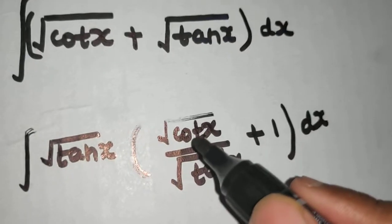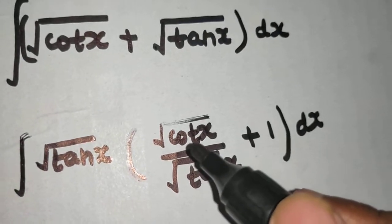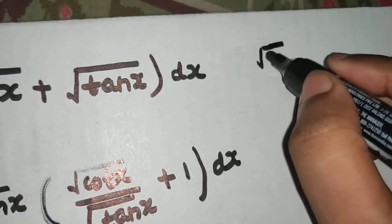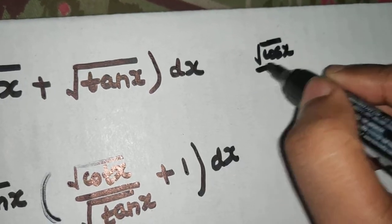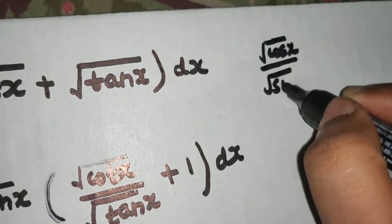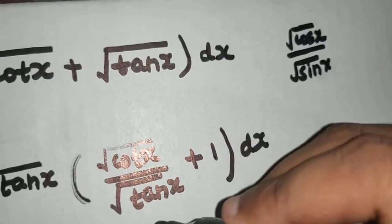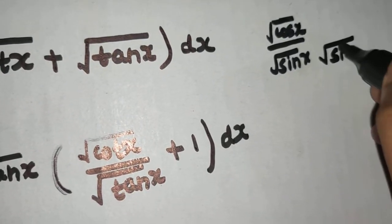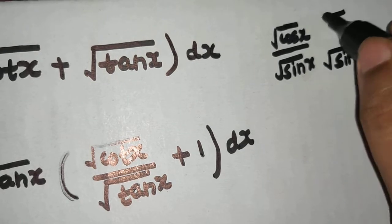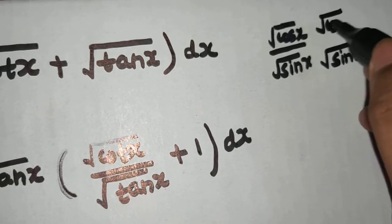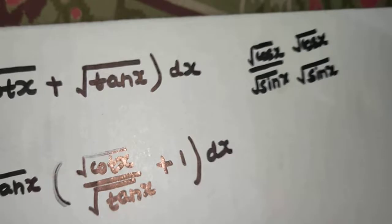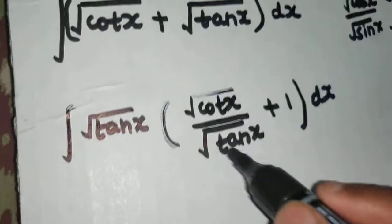Now, cot x is cos/sin, so you can write this as √(cos x) / √(sin x). In the denominator you have √(tan x), which is √(sin x) / √(cos x). Simplifying, cos x / sin x gives you cot x, so this term gives you cot x.